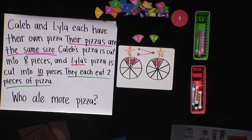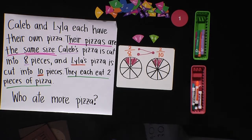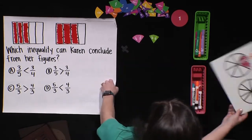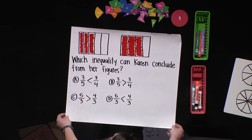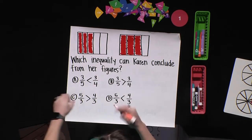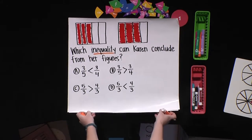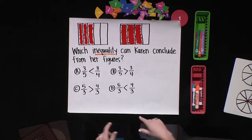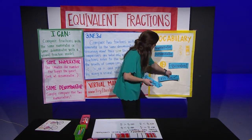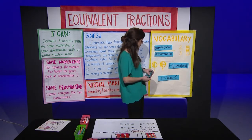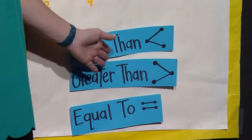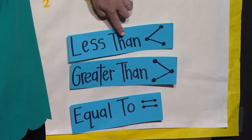Let's look at another problem. Here we're going to talk about Karen's two models. Which inequality can Karen conclude from her figures? The word inequality might stick out to you — you might be wondering, what is an inequality? Well, if we go to our word wall, I can remind you that an inequality is when something is not equal. So you compare it using less than, greater than, or equal to.